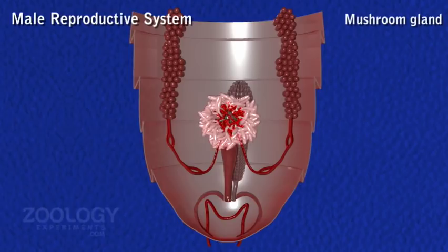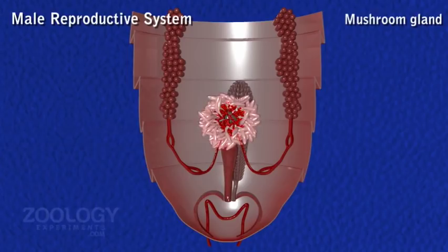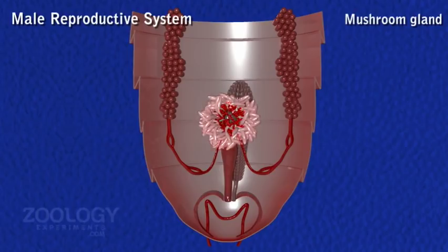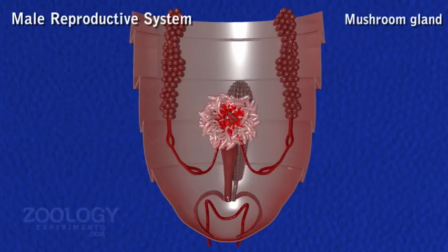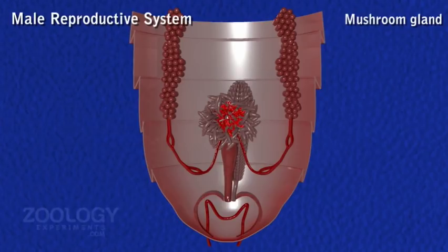The junction of the two vasa deferentia and ejaculatory duct is surrounded by a complex mushroom gland consisting of several compact finger-like blind tubules arranged in two distinct groups, opening into the anterior part of the ejaculatory duct. The first group, Eurycolia majores, are long, slender peripheral tubules that secrete the inner layer of the spermatophore. The second group, Eurycolia breves, are short tubules forming the bulk of the mushroom gland, and their secretion nourishes the sperm.